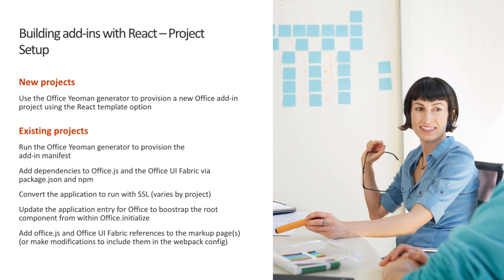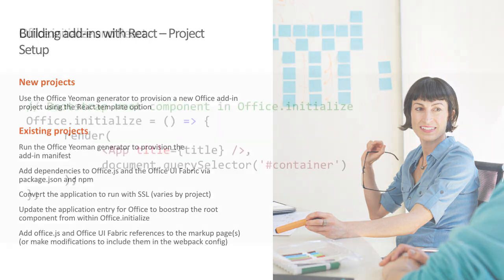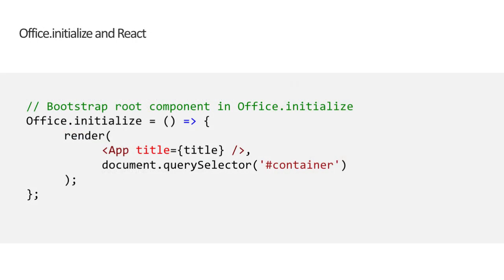You'll also need to add references to OfficeJS and the Office UI Fabric React. One of the most important aspects of using a modern client-side framework with Office add-ins is how the framework is bootstrapped in the markup. Every page that loads the add-in must call Office.initialize before running any other scripts. It's a best practice to bootstrap the main React component to the DOM within the Office initialize callback. The Office client that hosts the add-in will call this initialize function, and it must finish within five seconds — otherwise the Office client application will throw an error indicating an issue with the add-in.